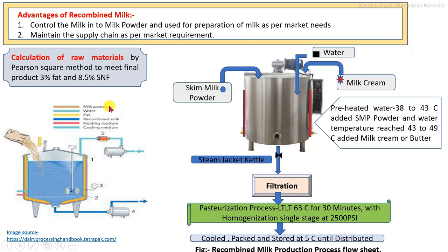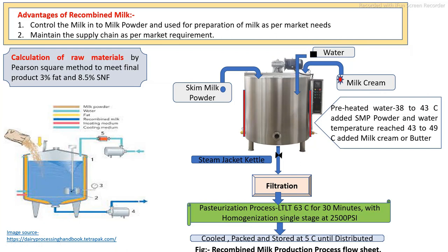In the production of recombined milk, the main constituents are mixed into the mixing tank. The tank should have provisions for an external jacket for heating, internal agitators, feed pipelines, and outlet pipelines connected with controlling devices. As per the calculations, skim milk powder, water, and milk cream are mixed into this mixing tank. First, water is loaded into the mixing tank as per the required quantity, and after loading, the water is preheated to 38 to 43 degrees Celsius by steam circulation.